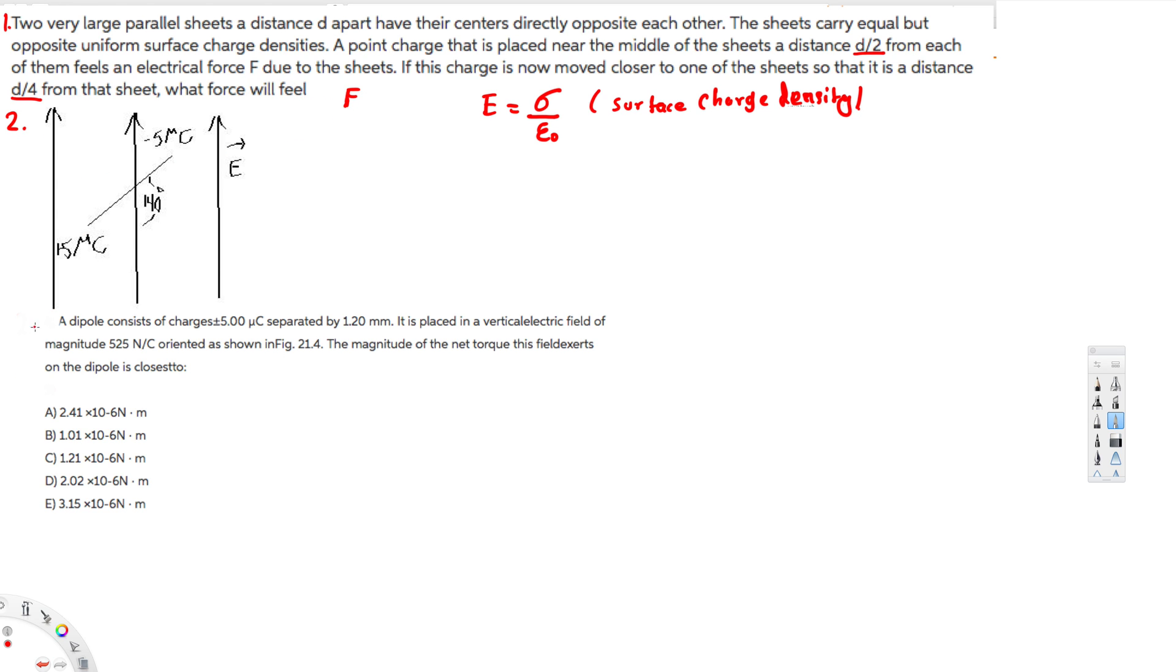Let's do the next part. The question is asking: a dipole consists of charges plus or minus 5 microcoulombs separated by 1.2 millimeters. It is placed in a vertical electric field of magnitude 525 newtons per coulomb oriented as the picture shows. The magnitude of the net torque this field exerts on the dipole is closest to which one?